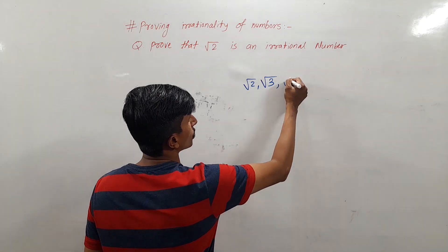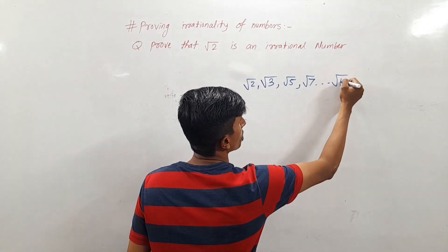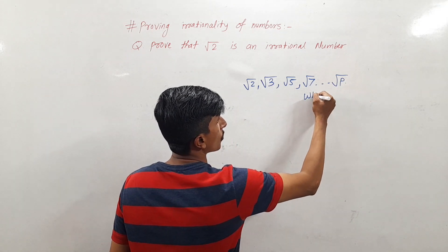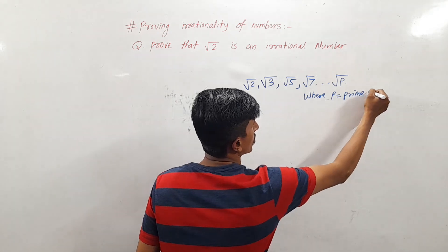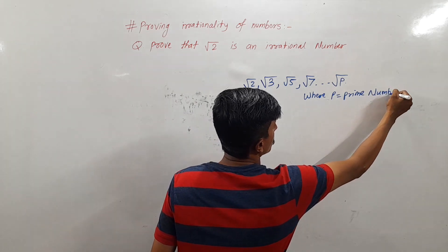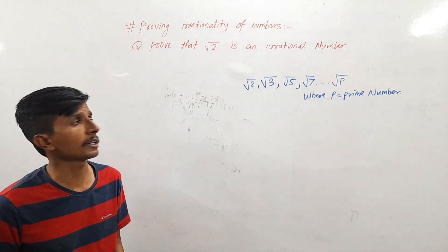root 2, root 5, root 7, and so on—root P, where P stands for prime number—these are irrational numbers.